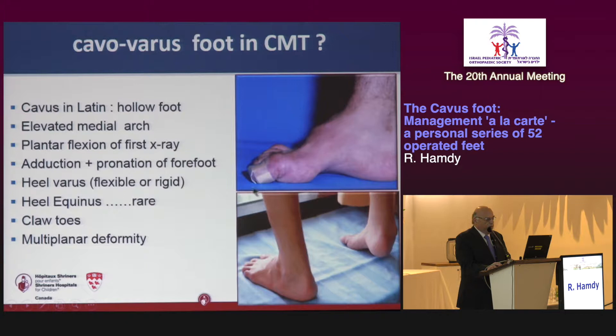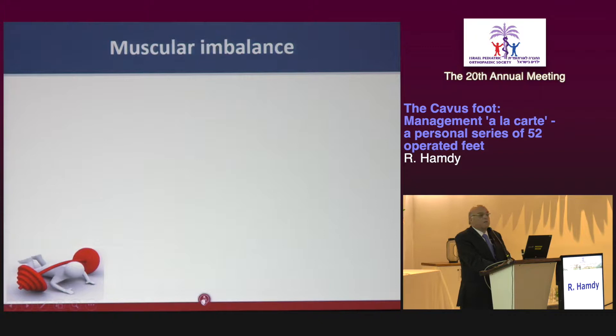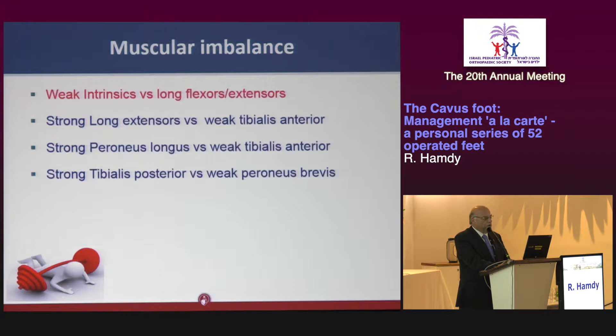That's the foot, and that's how I would describe how to approach this. These are all the deformities present: the equinus of the first ray — that's the first bony deformity that appears. Regarding muscular imbalance, I'll spend one minute on this because it's extremely important. Whatever you do — soft tissue release, triple arthrodesis, osteotomy — if you don't address the muscle imbalance, the deformity will recur one hundred percent.